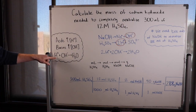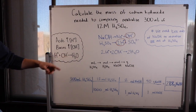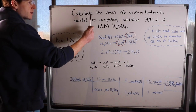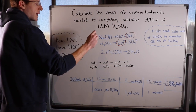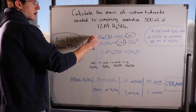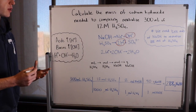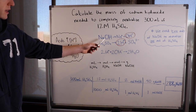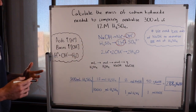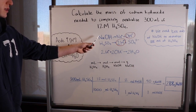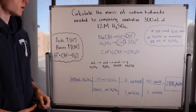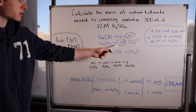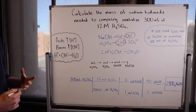For every single H+, we need a single OH- in order to completely and properly neutralize. The first step for all of these problems is to write out each acid and base and show what they're going to dissociate into. NaOH is going to dissociate into Na+ and OH-, or hydroxide ion. H2SO4 is going to dissociate into 2H+, two hydrogen ions, and a single SO4 2- compound.